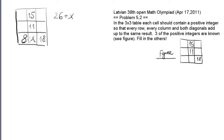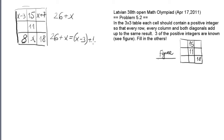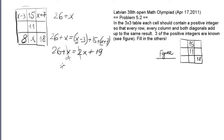Now considering both diagonals: 8 plus 11 is 19, so I should have x plus 7. In the second diagonal it's 29, so I should have x minus 3. In the first row, one side should be 26 plus x, and the other side is (x minus 3) plus 15 plus (x plus 7), giving two x's plus 19. This x cancels with one of those x's, and I'm left with x equals 7.